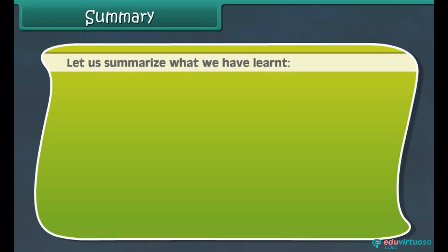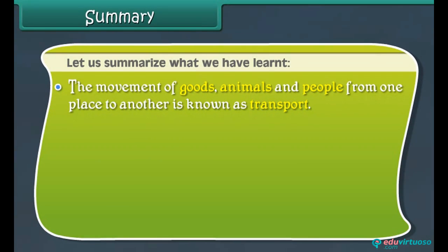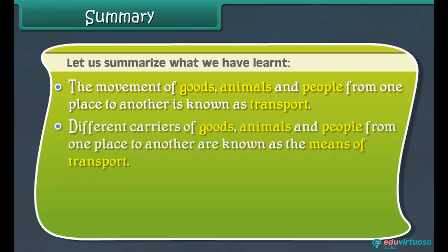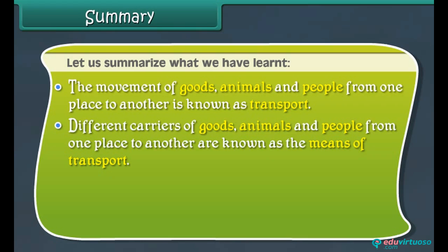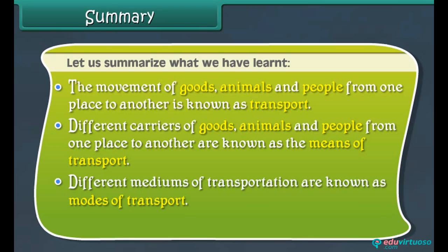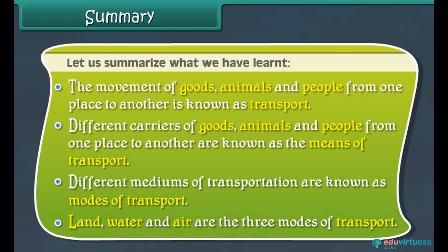Let us summarize what we have learned. The movement of goods, animals, and people from one place to another is known as transport. Different carriers of goods, animals, and people are known as the means of transport. Different mediums of transportation are known as modes of transport. Land, water, and air are the three modes of transport.